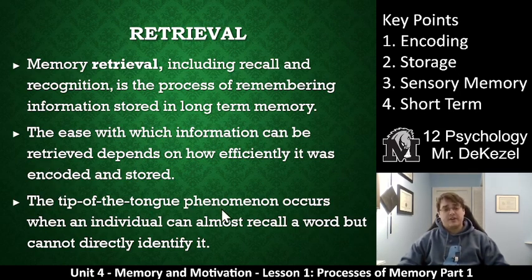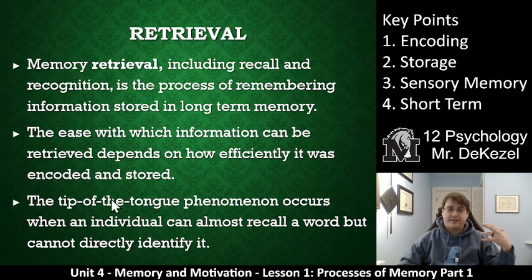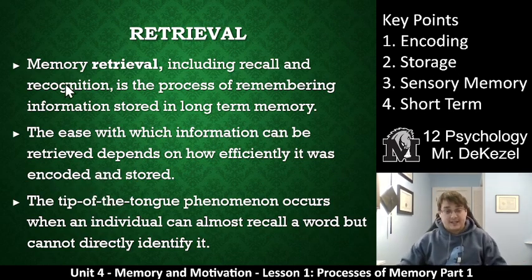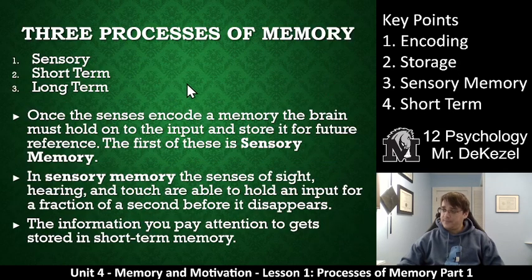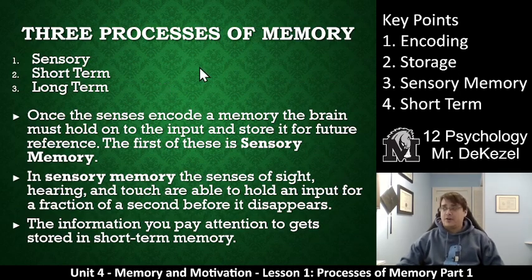Interesting — the tip-of-the-tongue phenomenon occurs when an individual can almost recall a word but cannot quite identify it. It's like you have it in your brain but can't translate it into speech — you know the answer but can't say it out loud. Speaking it out loud or writing it down is definitely an extra part of retrieval. So the three processes of memory are sensory memory, short-term memory, and long-term memory.